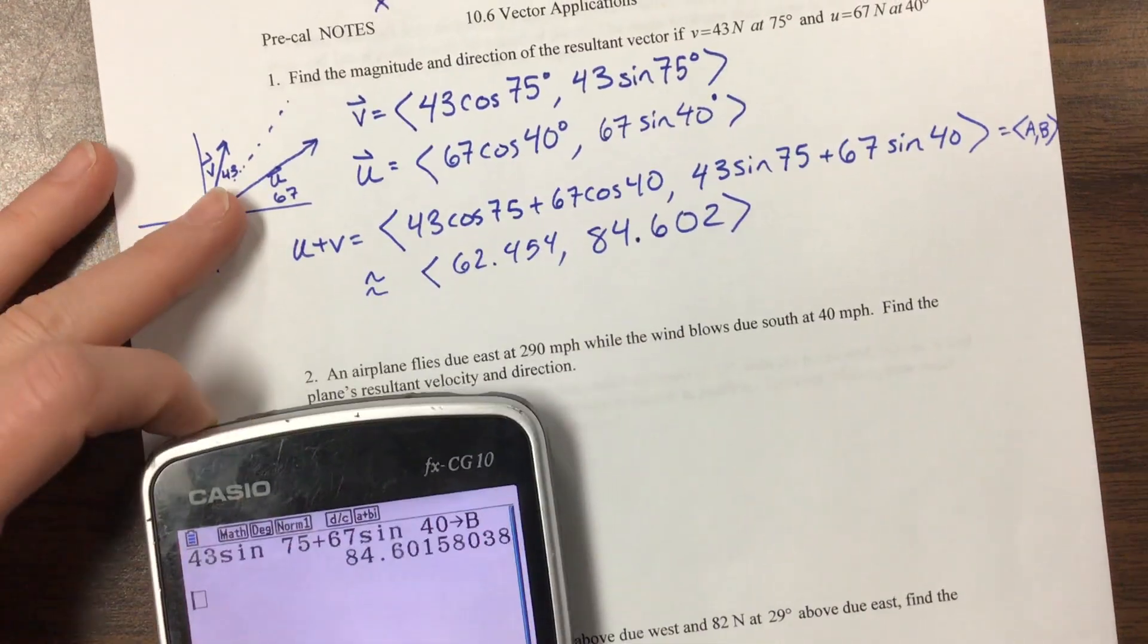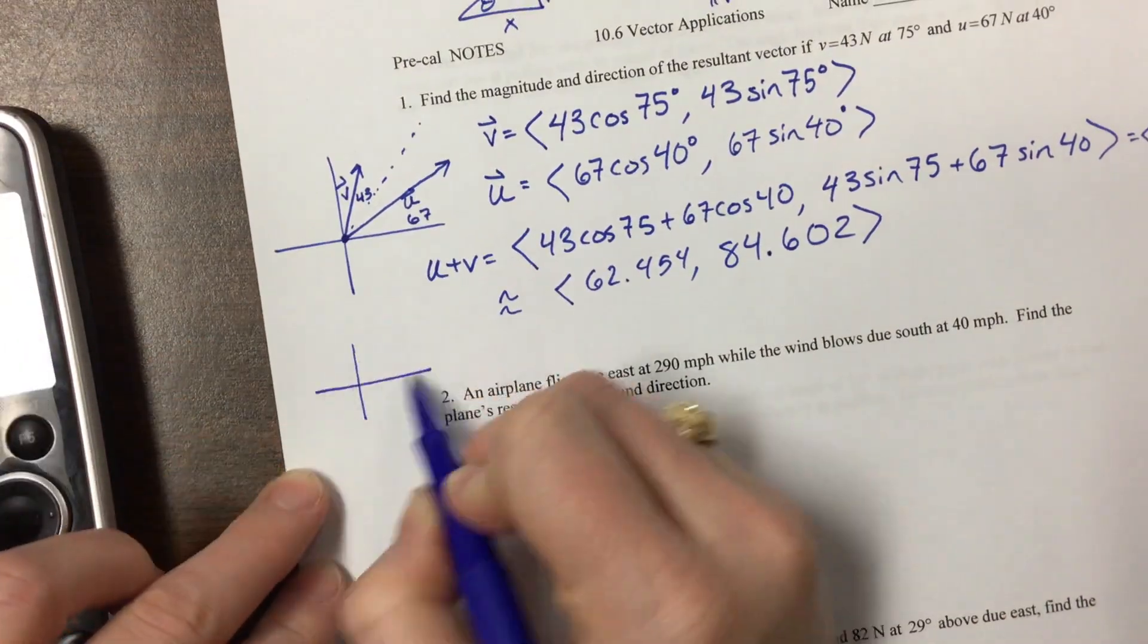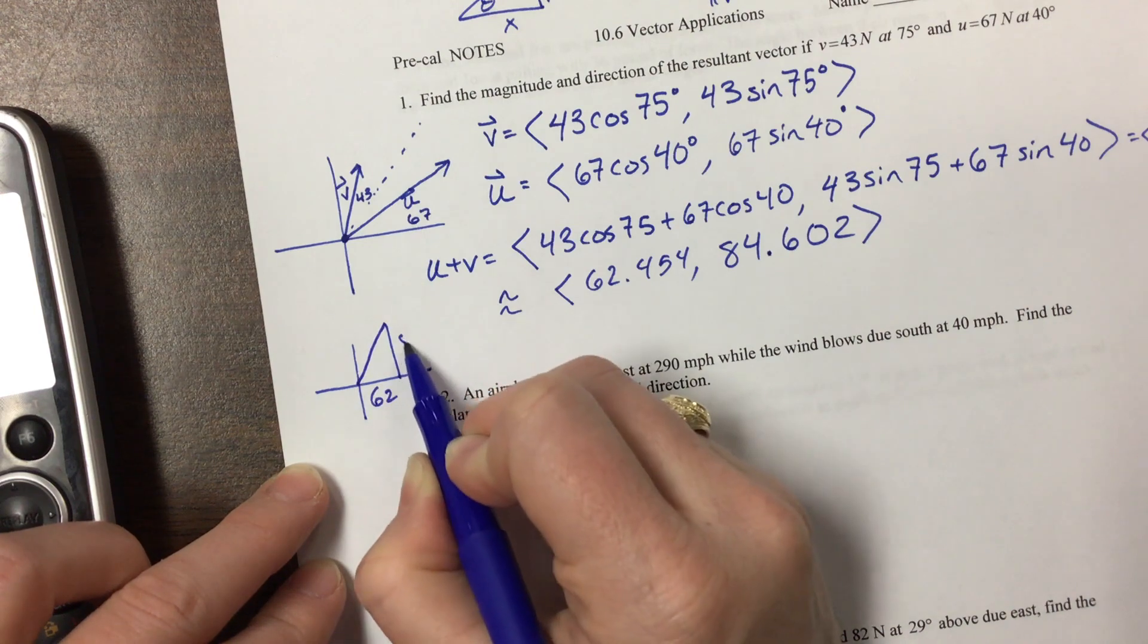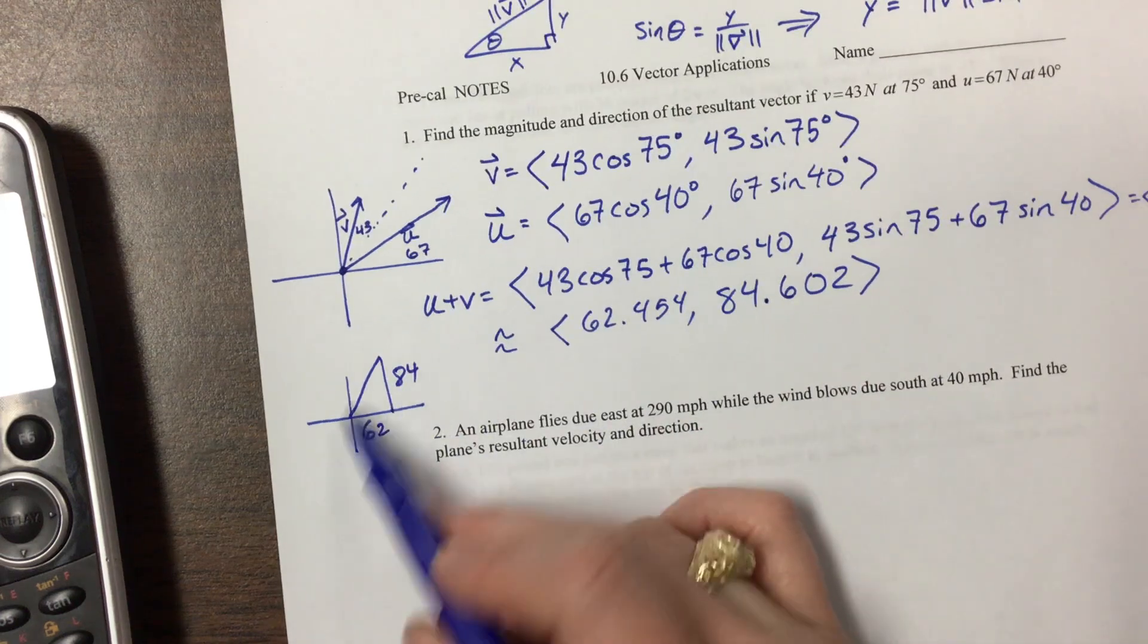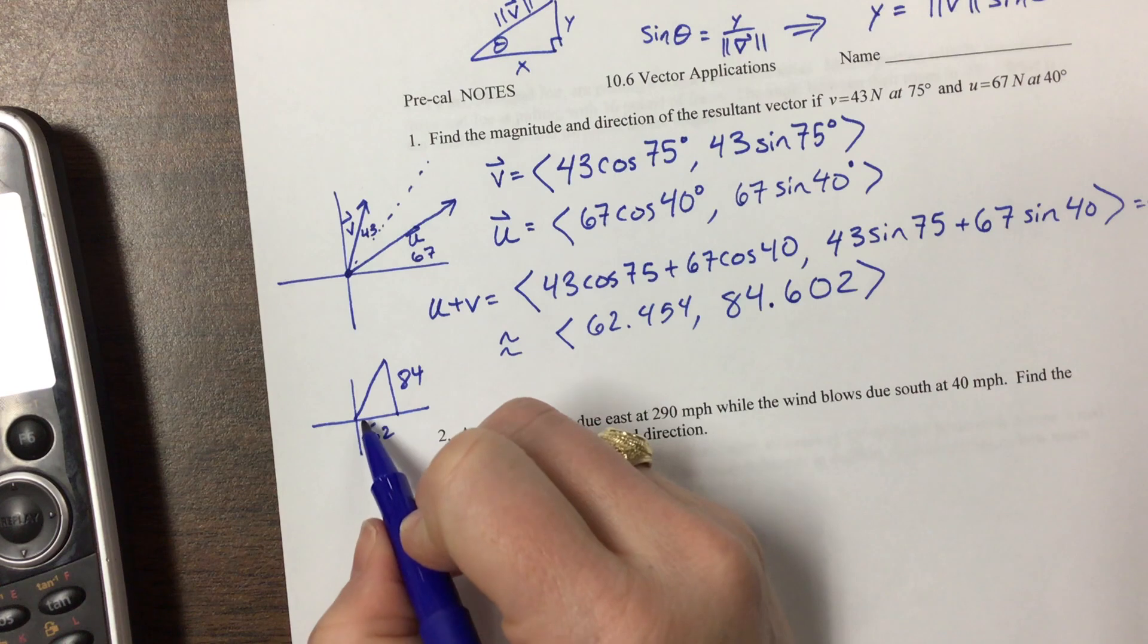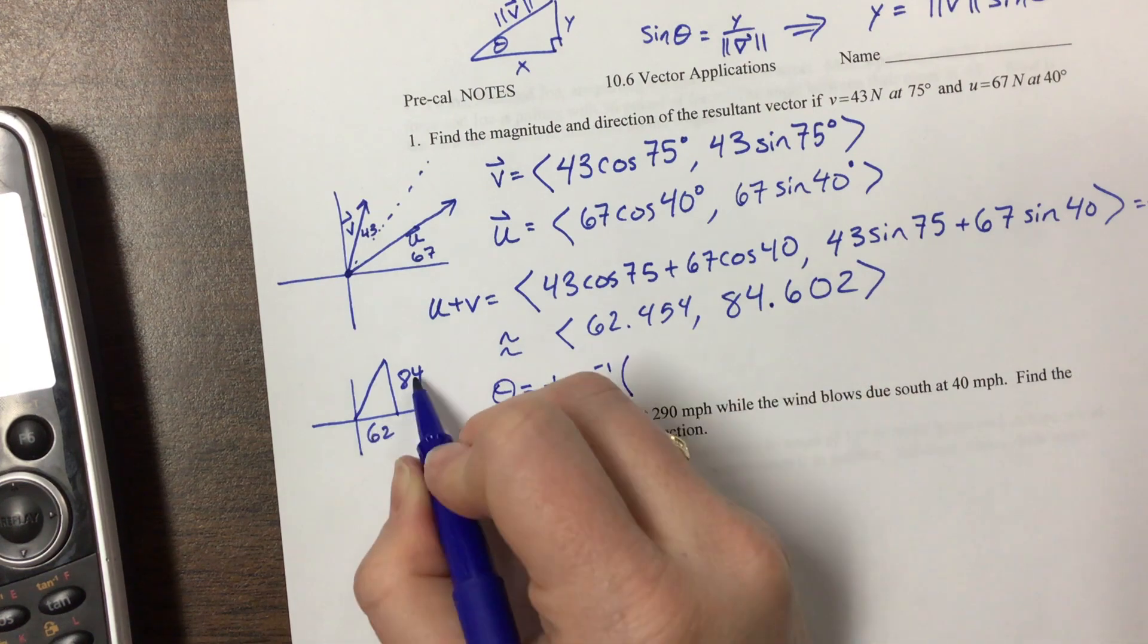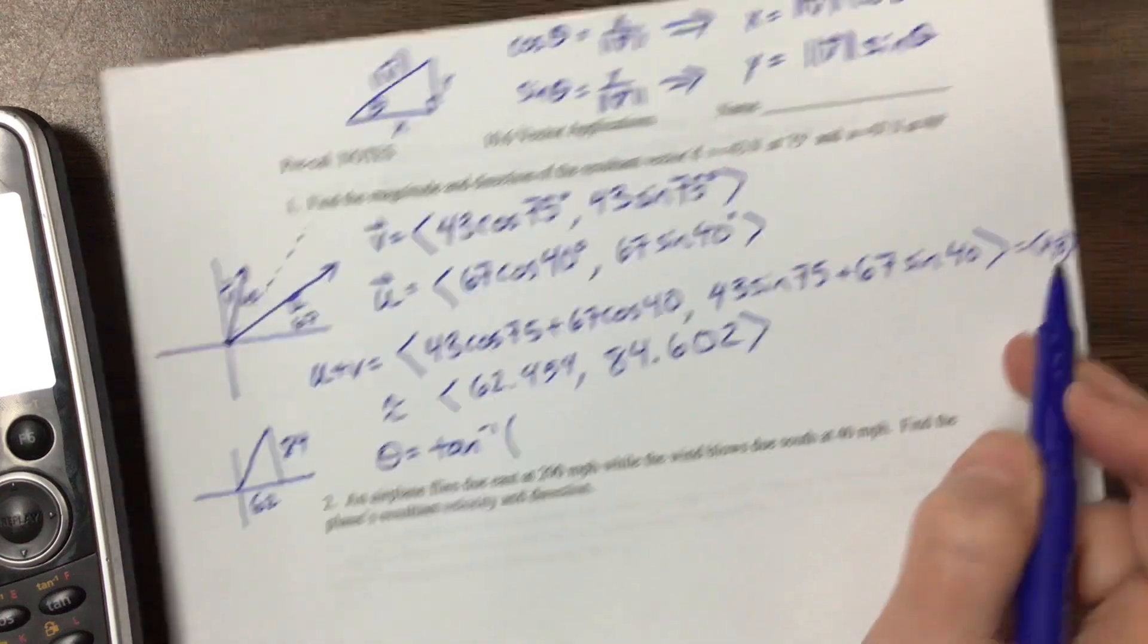And so now I have that this vector is going about 62 units and then 84 units up. So it's doing something like this, where this is about 62 and this is about 84. But they didn't say find its components. They said find its magnitude and direction. So if you remember from before, we need to do the inverse. So theta would be equal to the inverse tangent of Y over X.